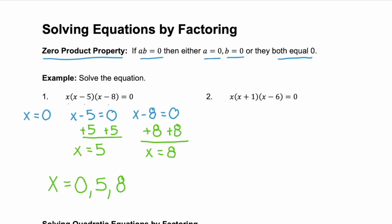Let's look at example two. Again, we have three factors: x, the binomial x plus 1, and the binomial x minus 6, and they equal zero. So the first factor could be zero — x equals zero. The second factor, x plus 1, could equal zero. Or the third factor, x minus 6, could equal zero.